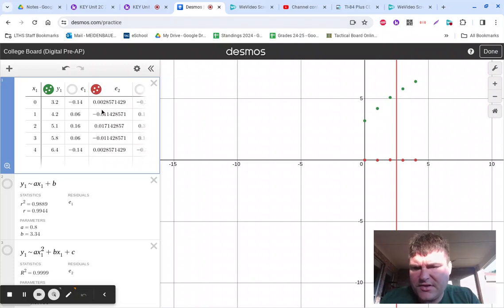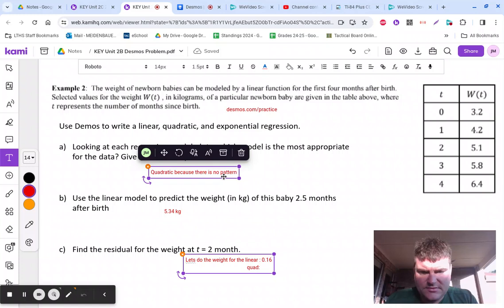Now let's do the same thing for the quadratic. The quadratic is the red one. That is 0.017.